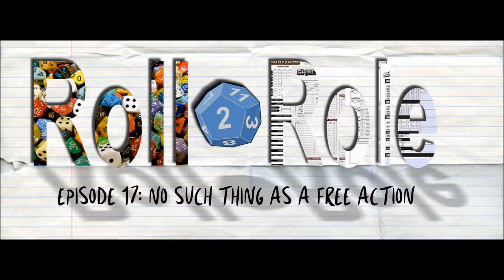I've seen a famous game master on a well-known online show impose a house rule that if you cast a bonus action spell, you can only use a spell slot up to second level for your other spell. I understand why he does that, but there are spells that start at fourth level and count as a bonus action, so I don't like that rule. To my knowledge we don't use it in our game, and if we do start using it, I will formally protest — though I probably won't win.